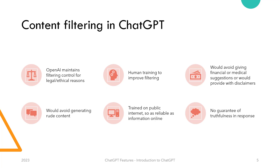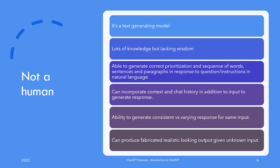Similarly, it would refuse writing angry or rude content like emails for you. Please note that ChatGPT's knowledge is built by crawling the public internet, so its answers are as reliable as the information available online. This means there is no guarantee of truthfulness to its output. ChatGPT is nothing but a predictive model, and as a good quote goes, it has knowledge but not wisdom.